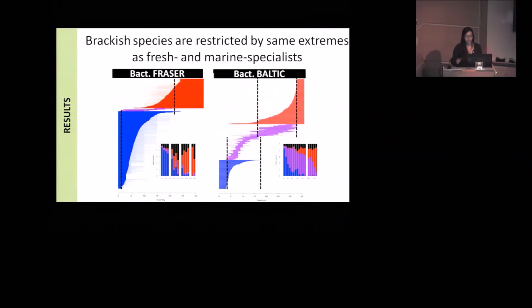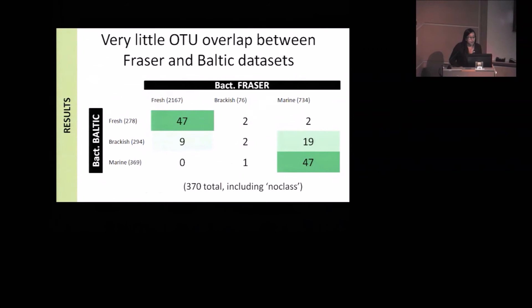The last thing we wanted to do was, the trends are approximately the same for Fraser and Baltic, but we also wanted to see what kinds of OTUs were shared between them. Whether the freshwater taxa identified in the Fraser data set were the same as the freshwater taxa identified in the Baltic data set. So I did a simple comparison of OTUs. We found that surprisingly few OTUs were shared between the two data sets. In the Fraser data set, there were 2,667 fresh OTUs and 278 fresh OTUs in the Baltic Sea, but only 47 of them were shared between the two. So this just goes to show that there are very different things living in the Fraser River and the Baltic River, despite the trends of turnover being similar between them.